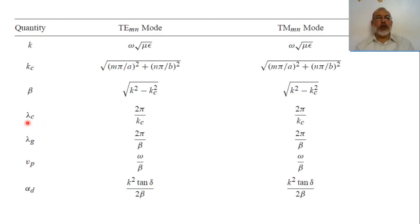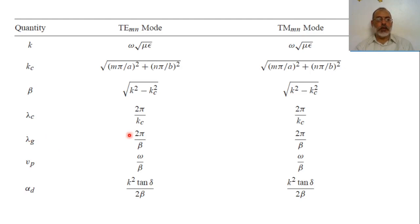The cutoff wavelength lambda-cutoff is 2·pi over Kc, or 2·pi over the cutoff wave number. The guided wavelength equals 2·pi over beta, and the phase velocity equals omega over beta.